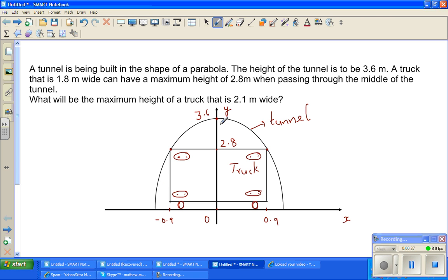A truck that is 1.8 meters wide can have a maximum height of 2.8 meters when passing through the middle. So this is the middle of the tunnel and this is that truck which is 1.8 meters, so you will have negative 0.9 to the left and 0.9 to the right. So 0.9 on both sides will make 1.8 and the height is 2.8.